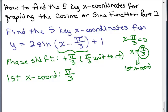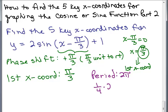To get the next X coordinate, we need to know the period. There's nothing in front of the X, so it's 2 pi over 1, or just 2 pi. The period is 2 pi. From part one, remember we need one fourth of the period, because that's what we add to each X coordinate to get to the next. One fourth of 2 pi reduces to pi over 2.